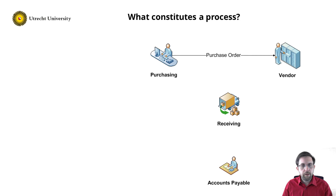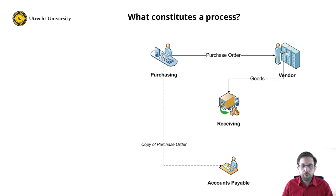Imagine the following situation. We have an organization that delivers products to the market, and therefore it regularly needs to buy goods. The process goes as follows: somebody at the purchasing department sends a purchase order to the vendor, and a copy is sent to the accounts payable office. After some time, the vendor sends the required goods to the warehouse. The warehouse receives the goods and tells the accounts payable office which goods have been received.